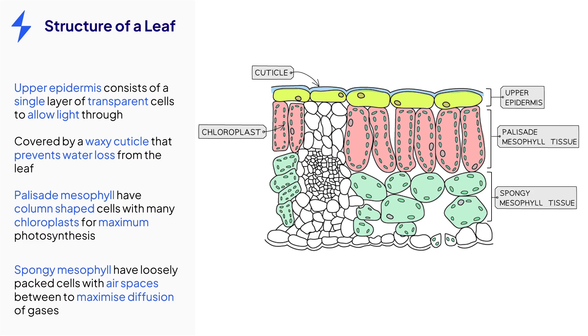Below the palisade mesophyll layer is the spongy mesophyll layer, which gets its name from the loosely packed cells with large internal air spaces between them. These air spaces increase the surface area to volume ratio to maximize the diffusion of gases such as carbon dioxide.